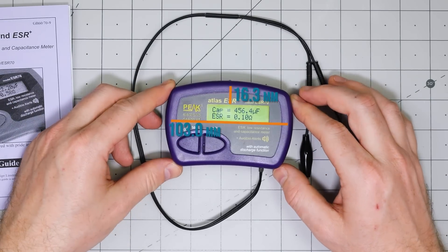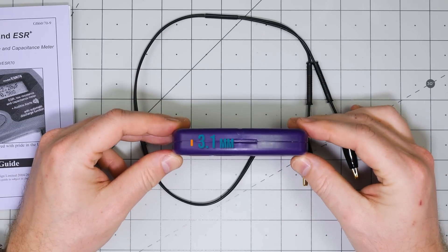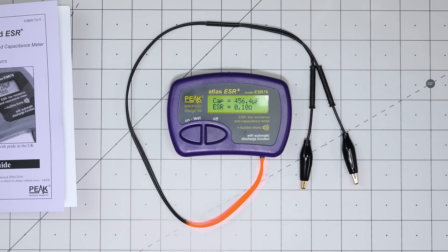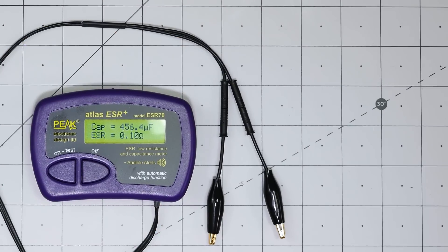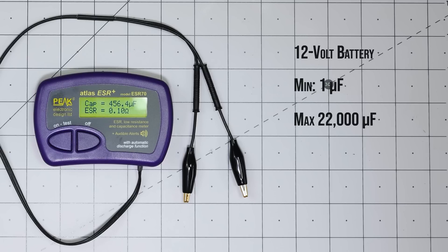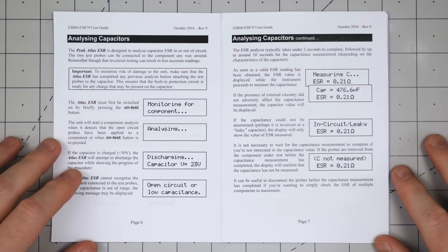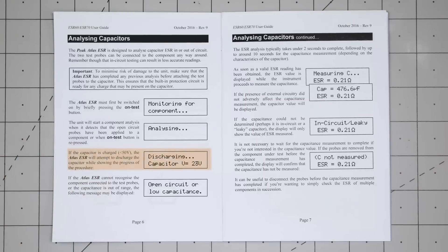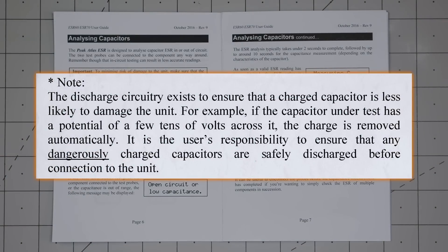When working with polarized capacitors, it doesn't care about polarity, which is pretty cool. Physically, it measures 103 by 70 millimeters and is 20 millimeters thick. The two test leads are 45 centimeters long and have 2mm banana jacks on their end. For power, it uses an internal 12-volt battery. It is capable of measuring up to 22,000 microfarads and ESR down to a short or zero ohms. It claims it can be used to measure ESR in circuit, so we'll test that out later. It also has the ability to discharge a capacitor before making measurements, though the manual does warn against relying on that feature.